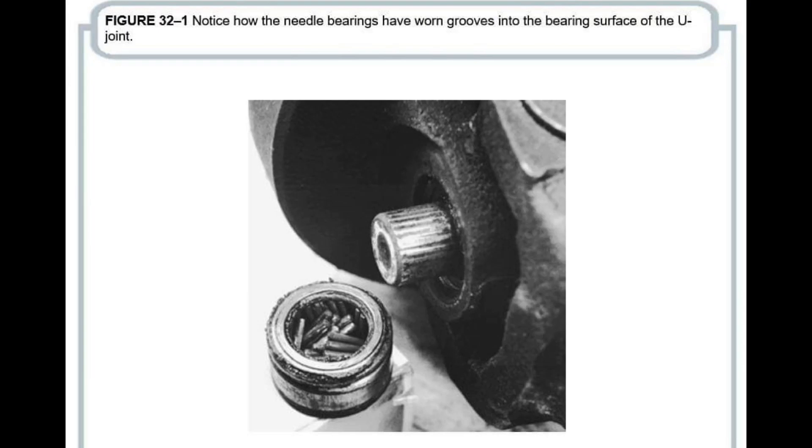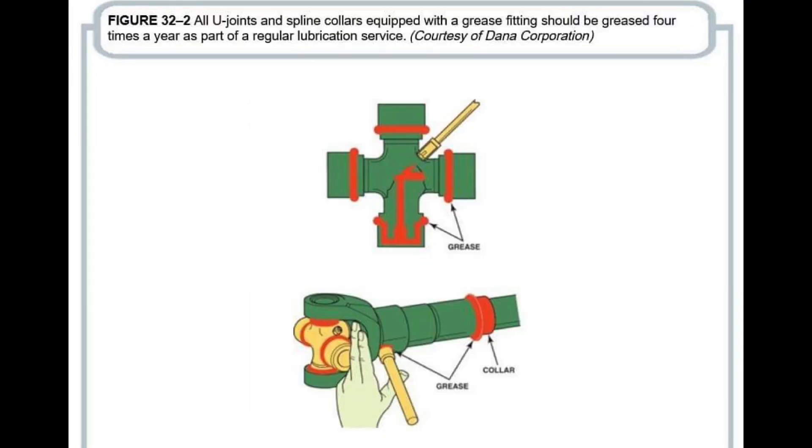Essential drive train component understanding: U-joint, drive shaft, axle, bearing, and hub.